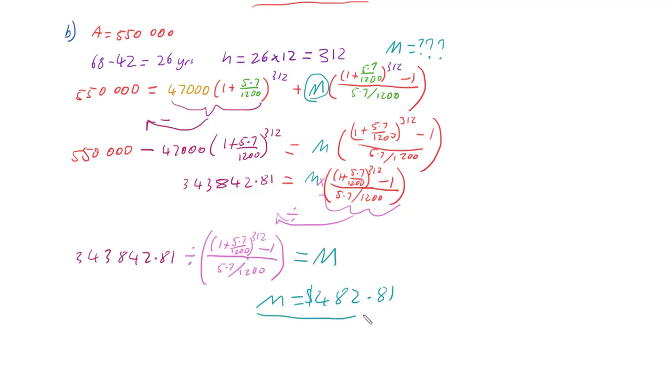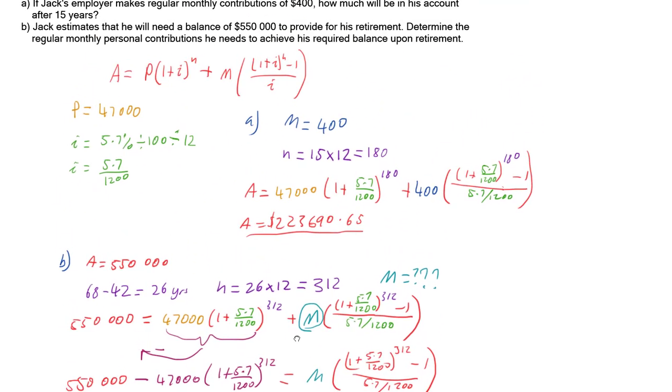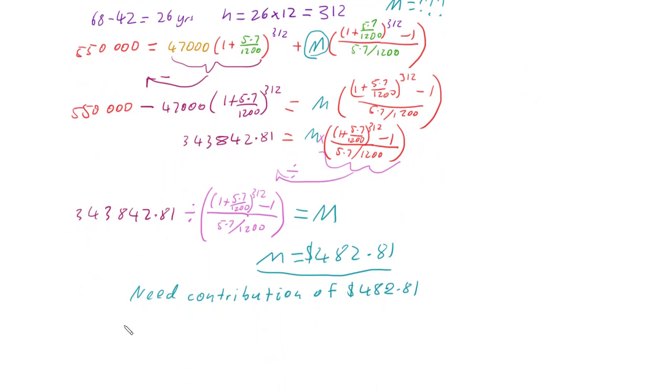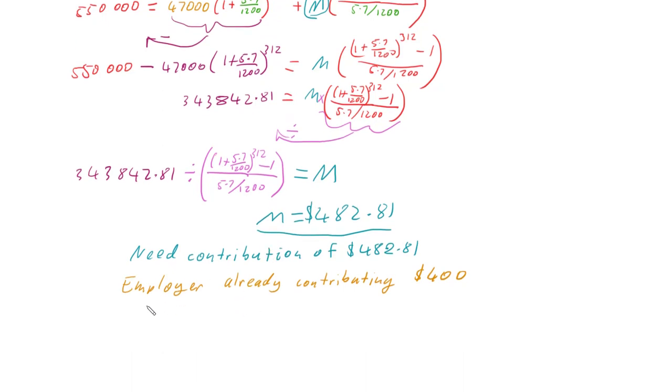So this is what the contribution needs to be, his monthly contribution needs to be $482.81. But his employer is already putting in $400, we knew that from before. So the employer is already contributing $400. So that means that Jack needs to add a personal contribution on top of his employer's contribution.